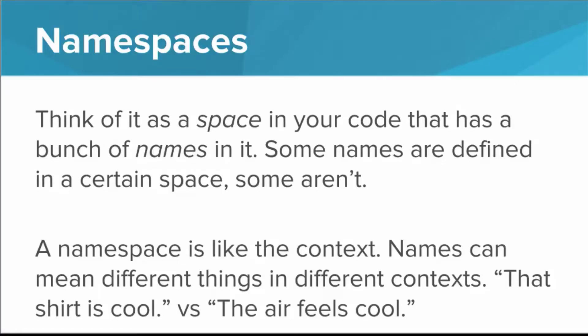You can think of a namespace in your code as a space in your program that has a bunch of names in it. Some names are defined in a certain namespace and some aren't. A namespace is a lot like context. Names can mean different things in different contexts — just think about the sentence: 'that shirt is cool' versus 'the air feels cool.'